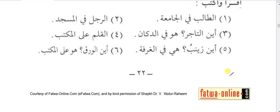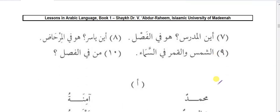More sentences: al-talibu fil-jaami'ati — the student is in the university; al-rajulu fil-masjidi — the man is in the masjid. Ayna at-tajiru — where is the merchant? Huwa fil-dukkani — he is in the shop. Al-qalamu alal-maktabi — the pen is on the table. Ayna Zainab? Hiya fil-ghurfati — she is in the room. Ayna al-waraqqu — where is the page? Huwa alal-kitabi — it is on the book. Note: al-waraqqu means both page and leaf; decide by context. Ayna al-mudarrisu — where is the teacher? Huwa fil-fasli — he is in the classroom. Ayna Yasirun — where is Yasir? Huwa fil-mirhazi — he is in the washroom. Ash-shamsu wal-qamaru fis-samai — the sun and the moon are in the sky.